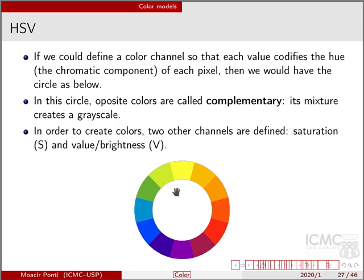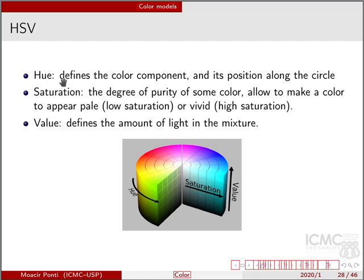In order to create different colors we have two other channels other than just hue: saturation that is S, and value V, or also can be brightness. Hue defines the color component and its position along the circle. As we vary hue we change from green to yellow to violet and so on and so forth, while saturation defines the degree of purity of some color. When we mix different colors in the middle, we have actually a very pale color so it has a low saturation. When we have a high saturation we have a vivid color so it's more pure.